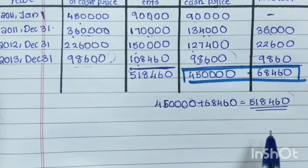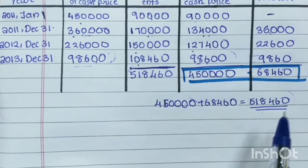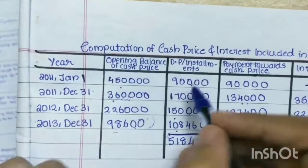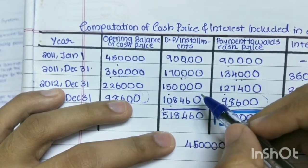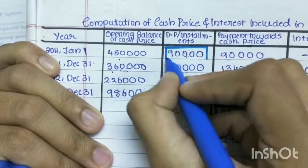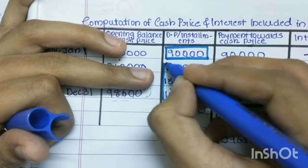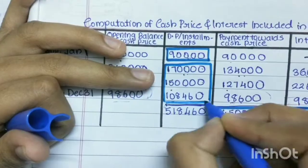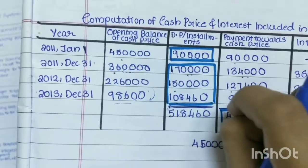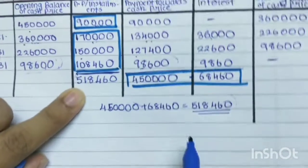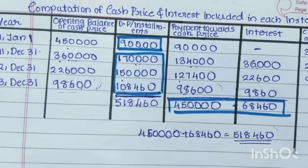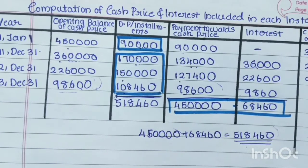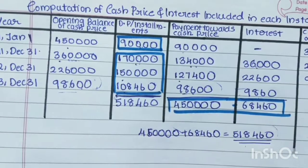The higher purchase price is down payment plus total installments. This is the down payment plus the installment amount. This is the highest purchase price. We will discuss the next question. Thank you.